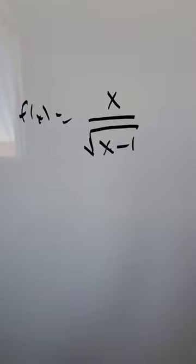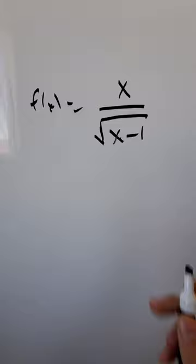Sometimes when you have a difficult rational function, the best approach to determining the domain is trial and error. x divided by root x minus 1.